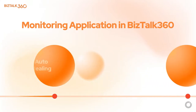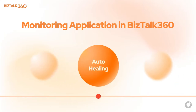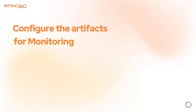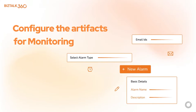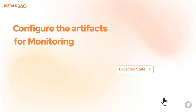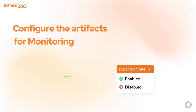BizTalk 360 not just monitors your artifacts — it also brings the artifacts back to their expected state if there is a mismatch between the current and the expected state. The first step for monitoring is alarm creation. In the alarm, you will define when to check the threshold or health of the mapped artifacts and who to notify when there is a violation.